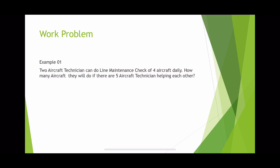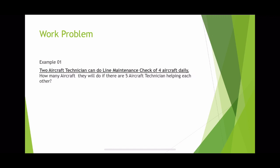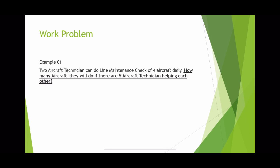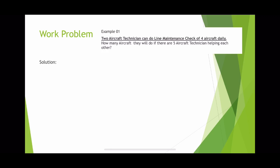So, to answer this: two aircraft technicians can do a line maintenance check of four aircraft daily. How many aircraft will they do if there are five aircraft technicians helping each other? For our solution, we let X equal the number of aircraft they finish if five aircraft technicians are helping each other.